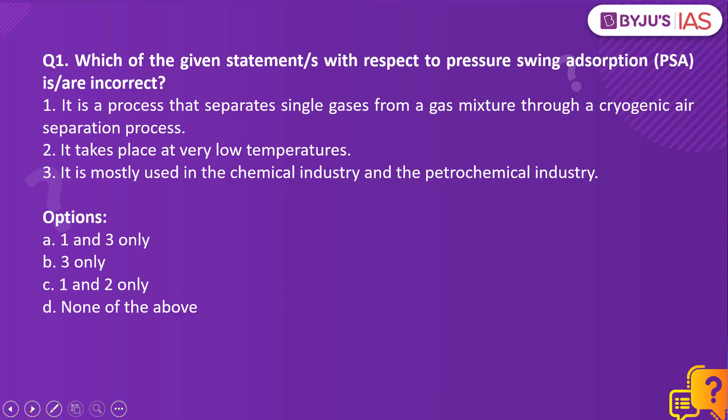Which of the given statements with respect to pressure swing absorption is or are incorrect? Statement 1: It is a process that separates single gases from a gas mixture through a cryogenic air separation process. Statement 2: It takes place at very low temperatures. Statement 3: It is mostly used in the chemical industry and the petrochemical industry.